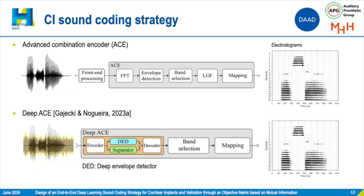As you can see, it's comprised of an encoder, a deep envelope detector that will act as the envelope detection module in ACE, a separator that will estimate a mask by which the deep envelope detector output will be multiplied, and finally a decoder that will output the denoised LGF output. Then the band selection and mapping are kept identical to the ACE sound-coding strategy because it's highly subject-sensitive.